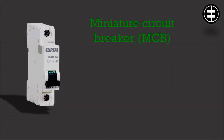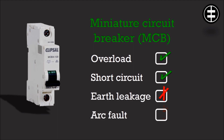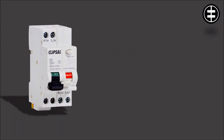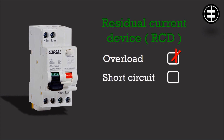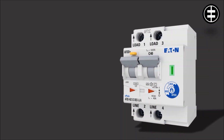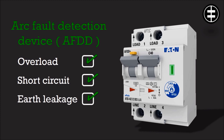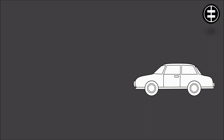Arc faults cannot be detected by common protection devices, because the arc current is normally lower than the rated and short circuit currents — miniature circuit breakers cannot detect the arc fault. Furthermore, residual current devices are unable to detect arc faults because arc faults do not create any earth leakage current. The recommendation is to use arc fault detection devices to protect electrical installations, buildings, and people from fire caused by arc faults. These devices are able to detect overload, short circuit, earth leakage current, and arc fault, and should be used in all buildings across a wide rated current range.